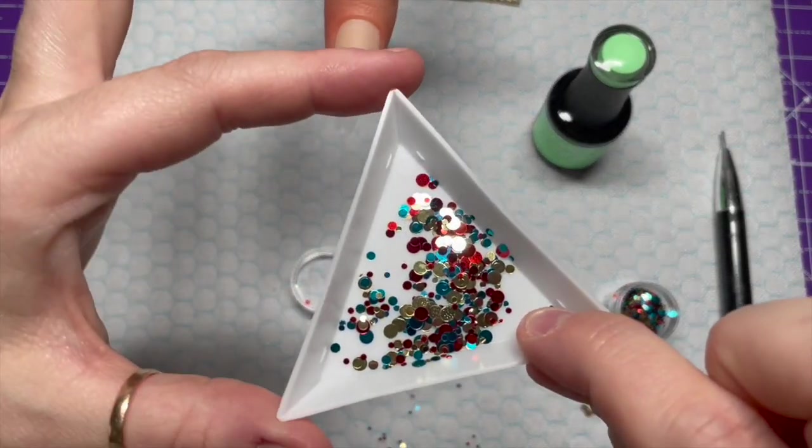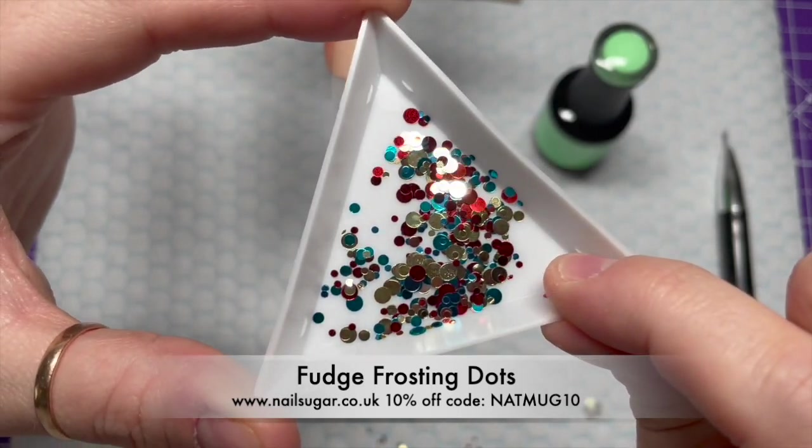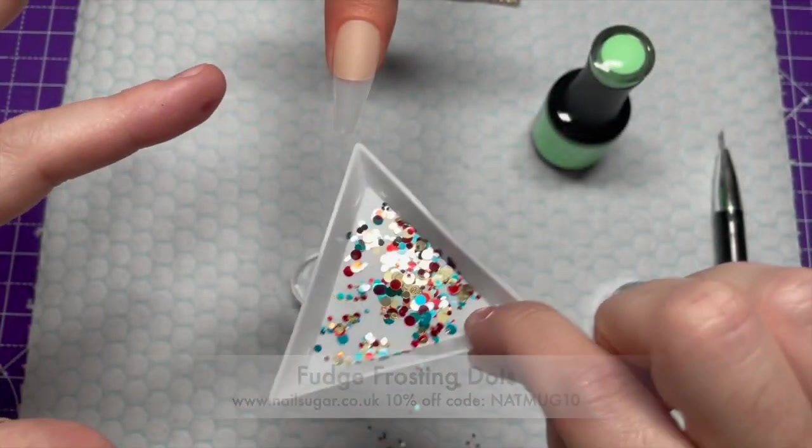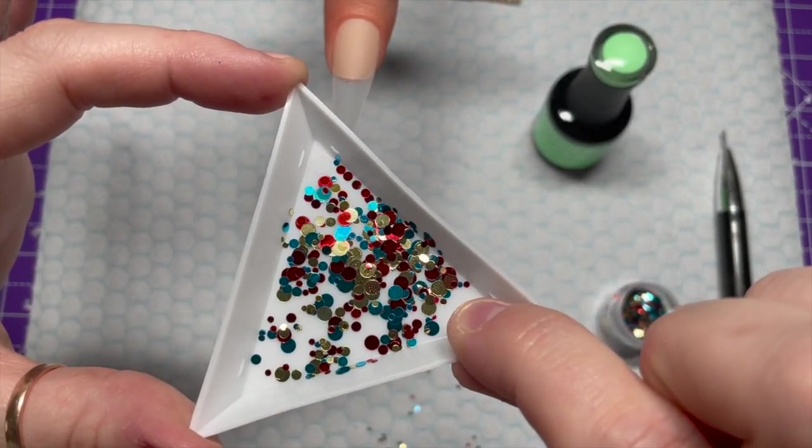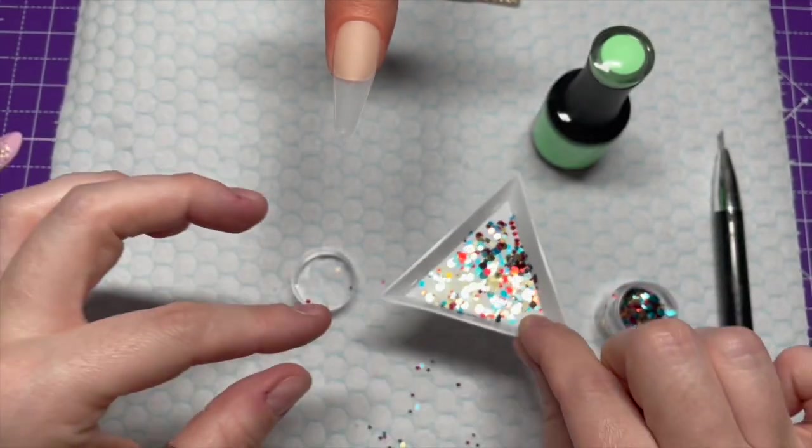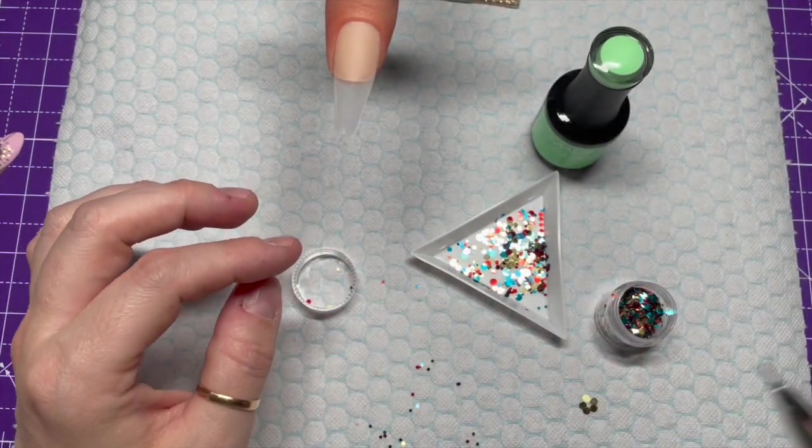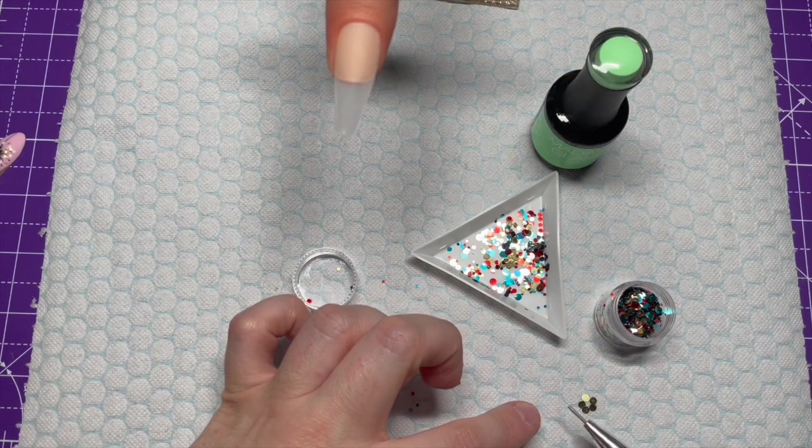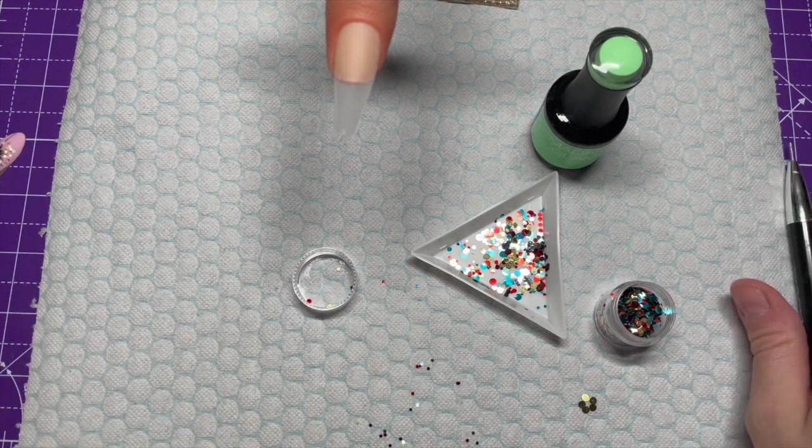In today's video, I'm going to be doing a single nail tutorial using these fudge frosting dots from Nail Sugar. They're lovely, but I'm only going to be using the gold ones. Now if you look down here, I made a little flower, and that's what we're going to be doing today.